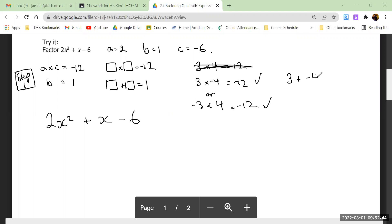We don't want this one because three plus negative four is negative one. Negative three plus four is a positive one. So the two numbers must be positive four with a negative three.